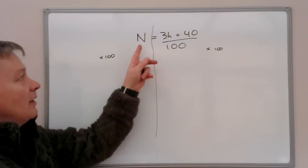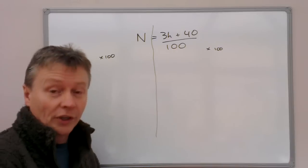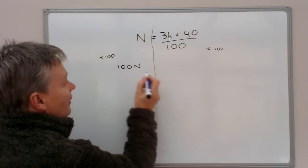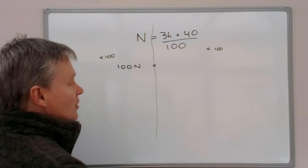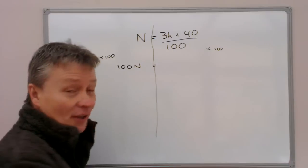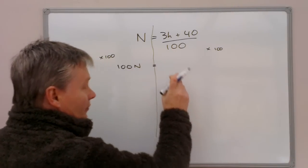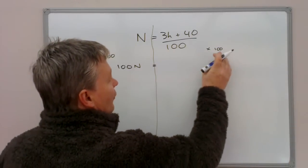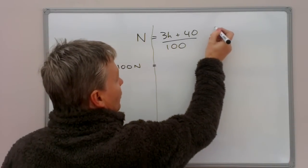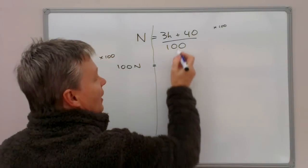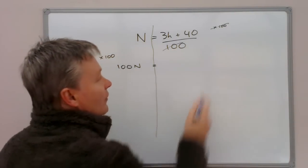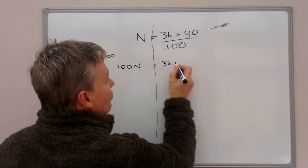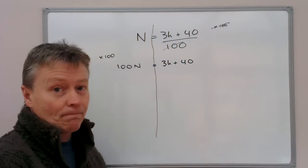And on this side, it's going to give me 100N. There's my equal sign, you'll note that it's one above the other, it's in a line. And on this side, I've got dividing by 100. And if I just sort of move that up here and put multiply by 100, then this will cancel with this. And it's just going to leave me with 3H plus 40 on its own.